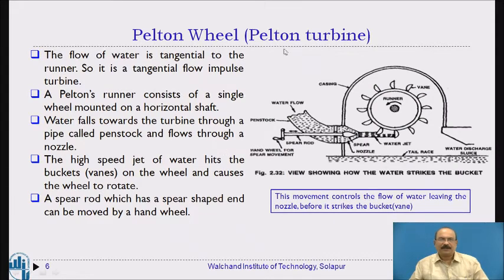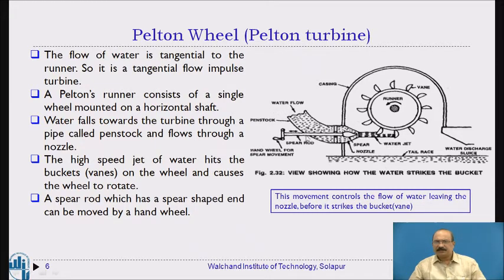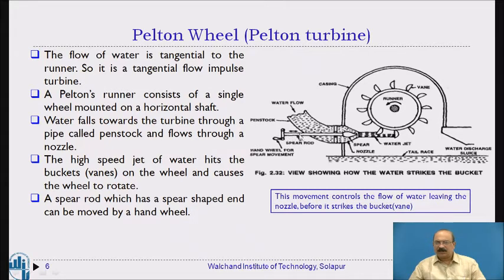Here the Pelton wheel working is studied. This is the casing, and the water flow takes place through it. This is the handle — that is a spear rod. This is the spear rod and this is the hand wheel for adjustment of the rod. Through this we are calling it as a spear, and this one is a nozzle. By adjustment of this rod, we are going to be adjusting the flow rate. This is the casing and this is the shaft on which we fix the runner.